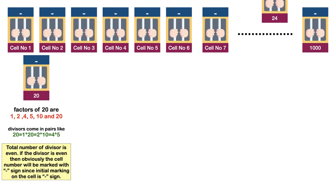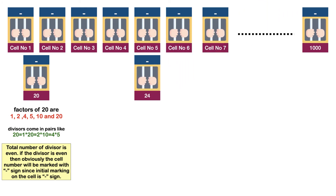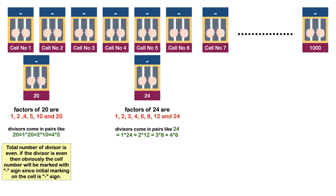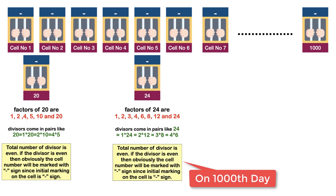Let's consider one more example: cell number 24. Factors of 24 are 1, 2, 3, 4, 6, 8, 12, and 24. Cell number 24 is toggled on days 1, 2, 3, 4, 6, 8, 12, and 24. Divisors come in pairs: 24 = 1×24 = 2×12 = 3×8 = 4×6. So the total number of divisors is even. If the number of divisors is even, then the cell will be marked with minus sign, since the initial marking is minus.